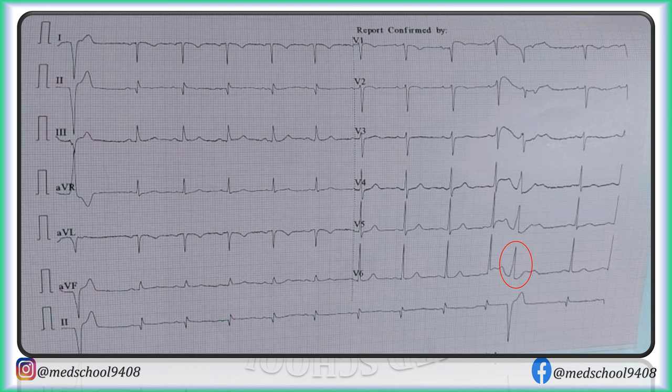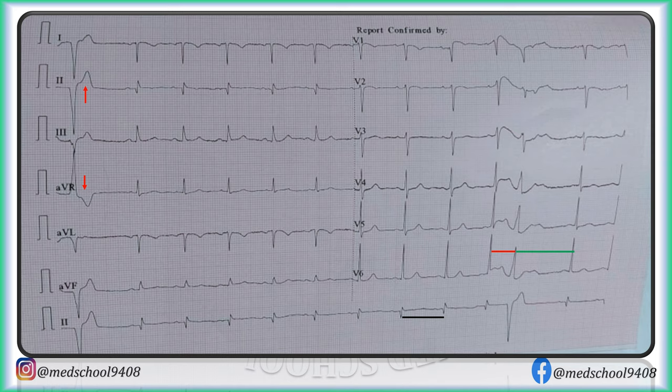This ECG shows a wide slurred complex occurring prematurely, indicated by a short coupling interval. The addition of coupling interval and compensatory pause is eight large boxes, which is equal to two times the RR interval, which is four large boxes here. Hence, the compensatory pause is complete. The P-Wave is embedded within the VPC as it cannot be seen separately. There is ST-segment depression and T-Wave inversion with the positive VPC, and ST-segment elevation with upright T-Wave with the negative VPC.